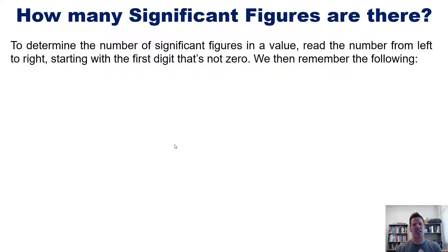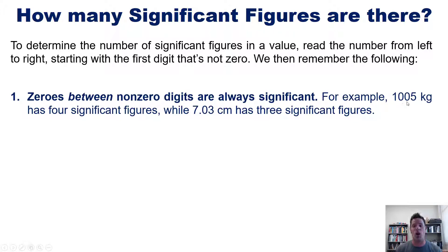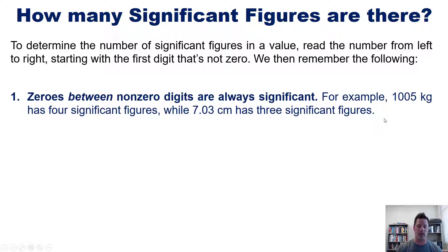To determine the number of significant figures in any given value, you read the number from left to right, starting with the first digit that is not zero. Rule one: zeros that are between non-zero digits are always counted as significant. For example, the number 1,005 kilograms has four significant figures — the zeros are between the non-zero digits one and five, so all four digits count. By analogy, the number 7.03 has three significant figures. Zeros between non-zero digits are always significant.